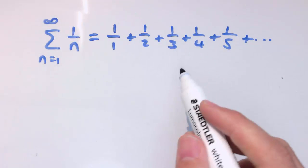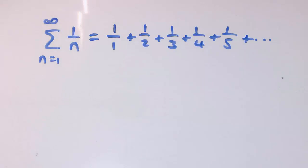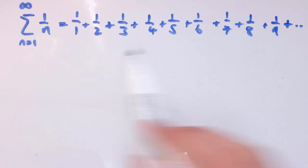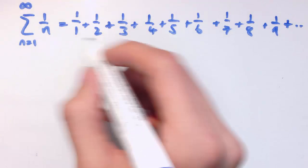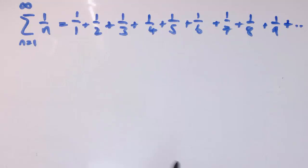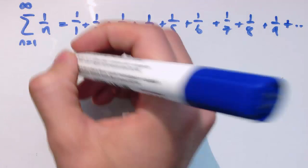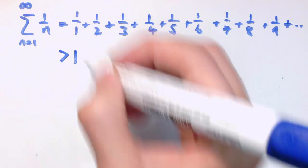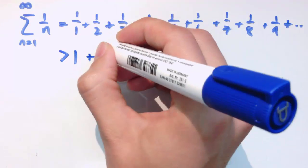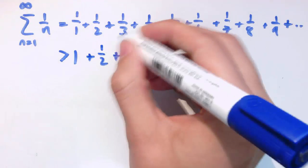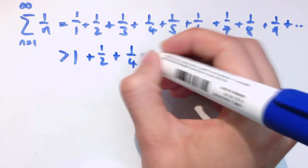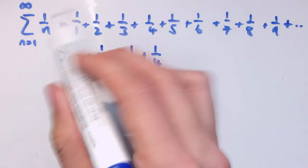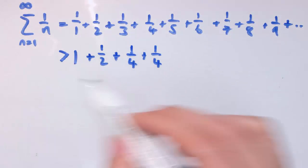I'm going to try and group these terms together. So I've got 1, a half, 1 third, 1 quarter, 1 fifth, 1 sixth, 1 seventh, 1 eighth, etc. What I'm going to say is that this series is bigger than the following. I'll keep 1 over 1 as 1, then I'll have a half, and now I'm going to replace a third with a quarter. All I'm saying is not that these two things are equal, but that what I had to start with is bigger than what I've now got — I've thrown some stuff away.